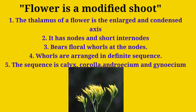The shoot is modified into the flower in the form of simple leaves, called modified leaves. The following points are put forward as evidence to prove that the flower is a modified shoot. First, the thalamus of a flower is the enlarged and condensed axis. The thalamus is the modification of the aerial stem and is the seat for the flower to grow.